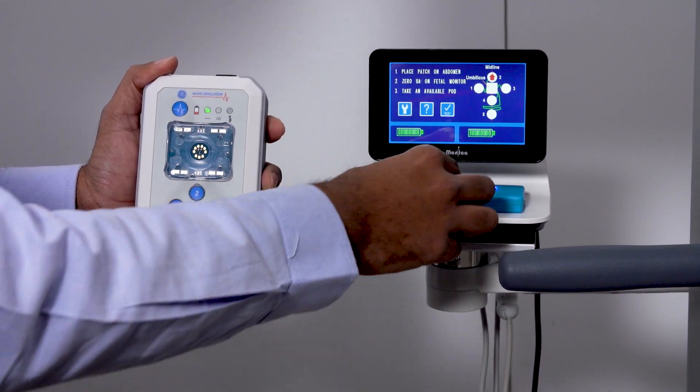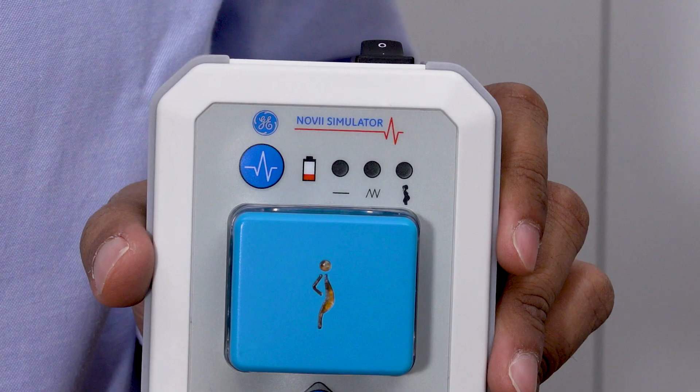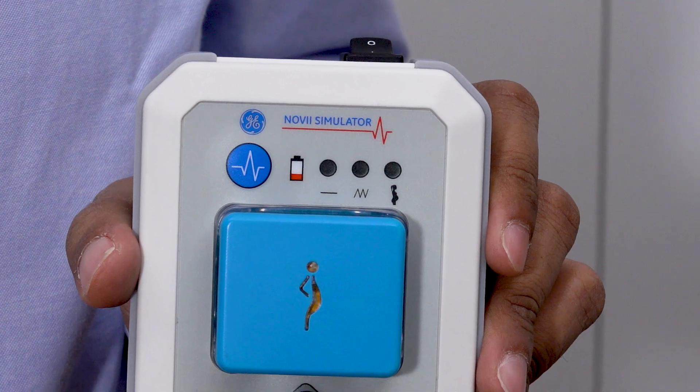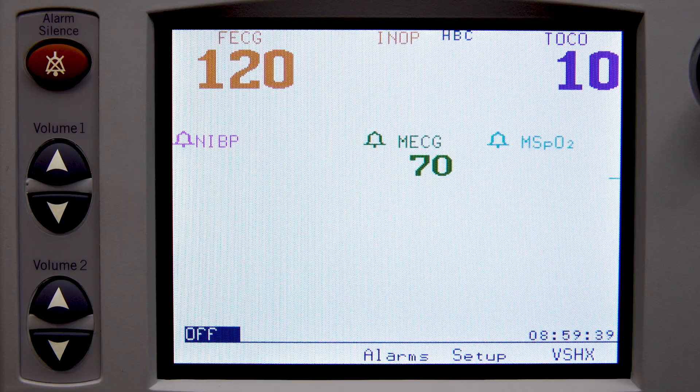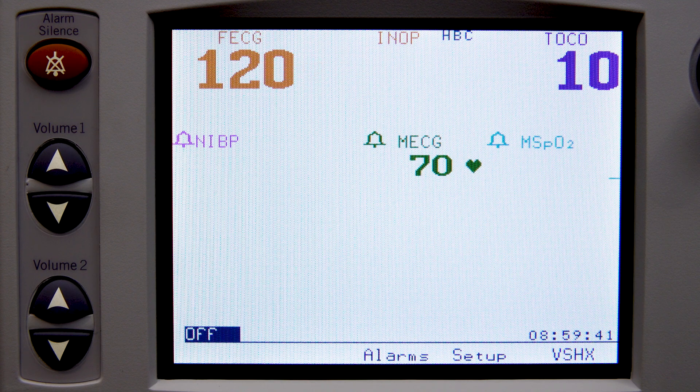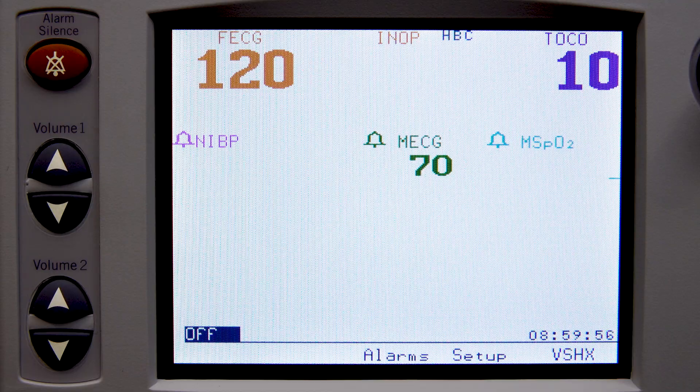The Novi simulator lets you simulate in three different modes. Constant mode, which is also the default mode, lets you simulate maternal heart rate, fetal heart rate, and uterine activity signals at constant values, which is a maternal heart rate of 70 plus or minus 3 beats per minute, fetal heart rate of 120 plus or minus 3 beats per minute, and uterine activity of 0 to 50, plus or minus 10.